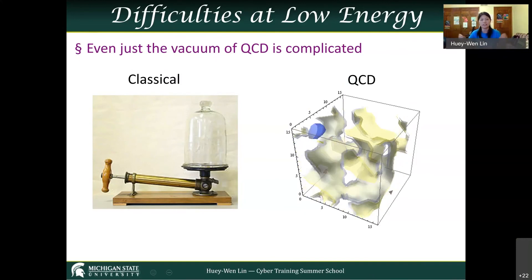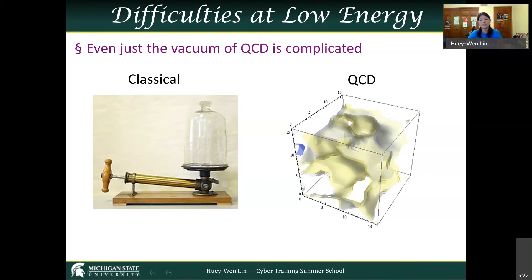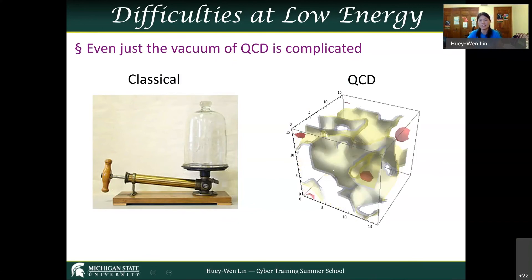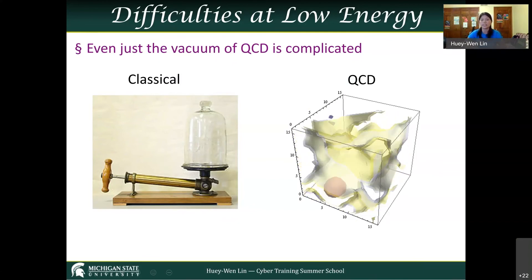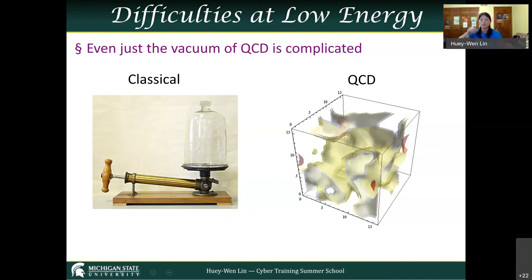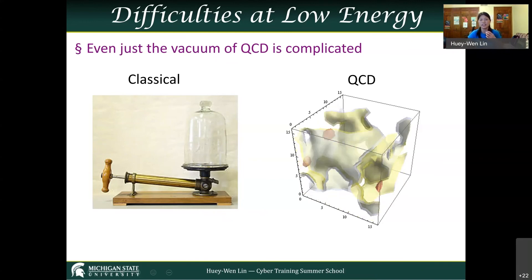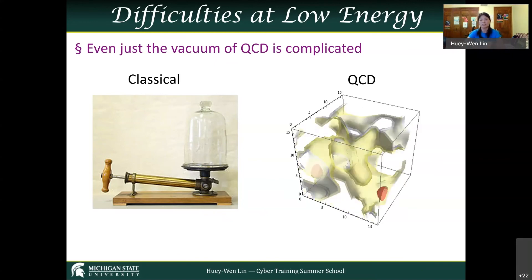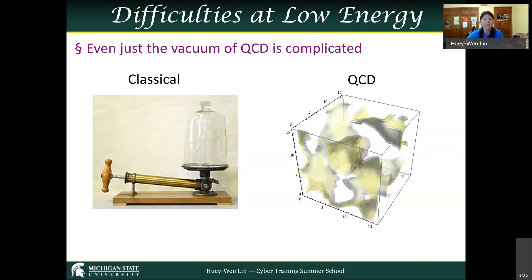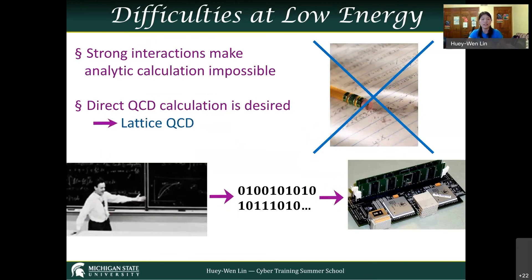The problem is that at low energy, even the QCD vacuum is not easy to describe. In the classical world, vacuum is just nothing, but at the QCD scale, vacuum is not nothing — it's dynamical and changing. Quarks can appear and disappear, and you have different topological gluon interactions constantly changing. Just describing the basic ground state is not easy, which is why we do lattice QCD.